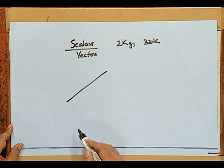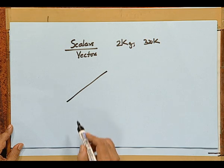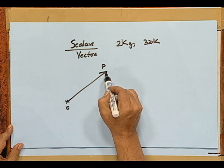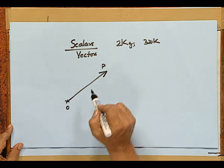Why do we need these quantities with a specific direction? Let us take some examples. Let us say O is a point and the location P is indicated in the figure. The direction of P is indicated by an arrow.